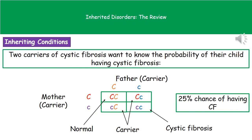Here is an example of the type of question they may ask on your exam paper. The question states that two carriers of cystic fibrosis want to know the probability of their child having cystic fibrosis, and you are asked to draw a genetic diagram. We set it out using a Punnett square, with the father on the top and the mother on the left-hand side. Since the question tells us they're both carriers, we label them as carriers and write out their individual genes — each has one capital C and one lower case C, representing one faulty allele each.